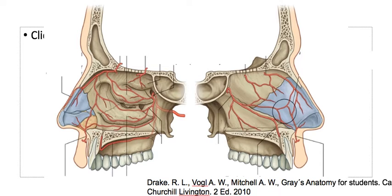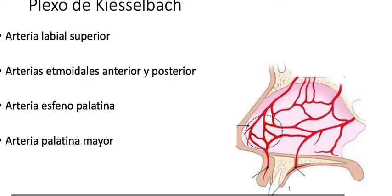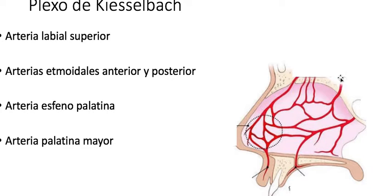Now here we have the Kiesselbach plexus. This plexus is the major place for anastomosis between the arteries and is the most common location for anterior nosebleeds. It is formed by the posterior ethmoidal artery, anterior ethmoidal artery, sphenopalatine artery joining with the nasal branches of the palatine artery, and with the nasal branch of the superior labial artery.